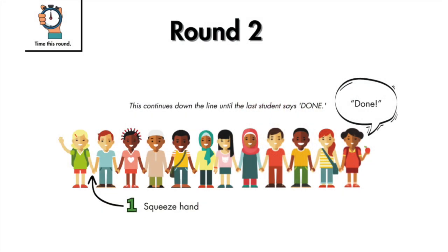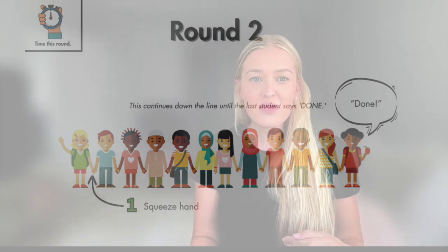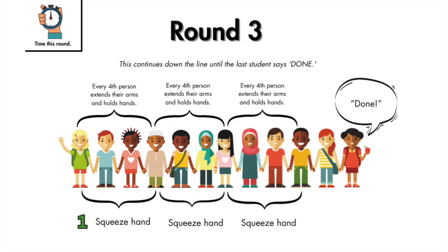Round two: students don't say names — they just squeeze the hand, so it gets faster. Once it reaches the end and the person says 'done,' the teacher writes the time. Round three: not every person is holding hands — only one in every four. The first and fourth person hold hands and that pattern continues. They just squeeze, and it ripples to the end. You can imagine this is going to be the fastest round. The teacher writes the final time and the activity is done.